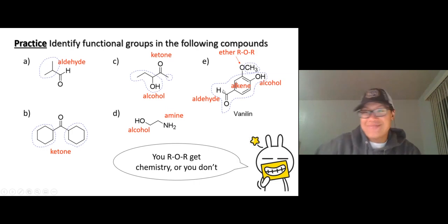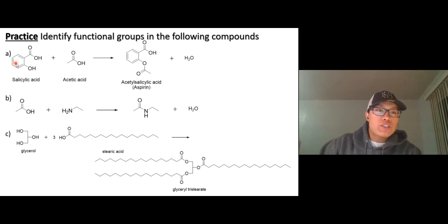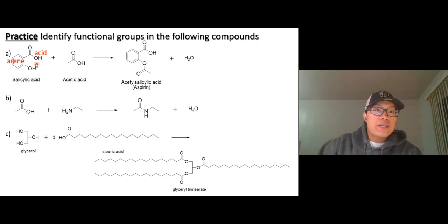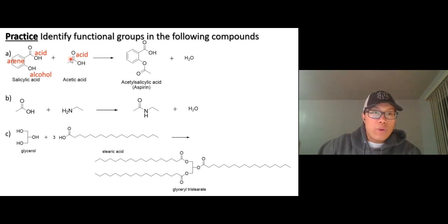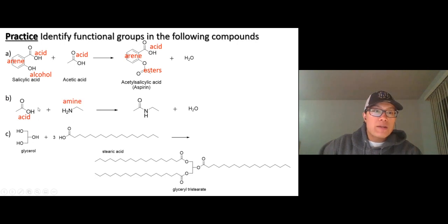This next one should be easier. In compound A, we have a carboxylic acid, an arene, and a hydroxyl (alcohol). Acetic acid is a carboxylic acid. When they react one-to-one, we get what's shown: benzene (arene), and C double bond O with O — that's an ester, not an ether. In compound B, we have a carboxylic acid and an amine — acid and amine react to give an amide.